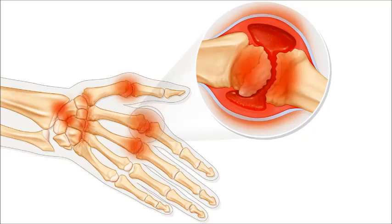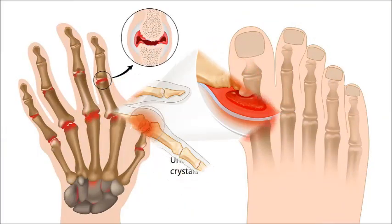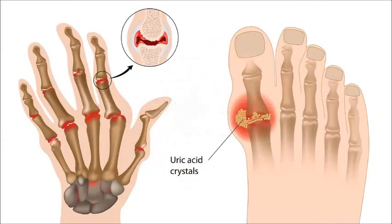Anemia. Many people with RA also have anemia. Anemia happens when there are too few red blood cells in the blood. Red blood cells carry oxygen to the tissues and organs of the body.